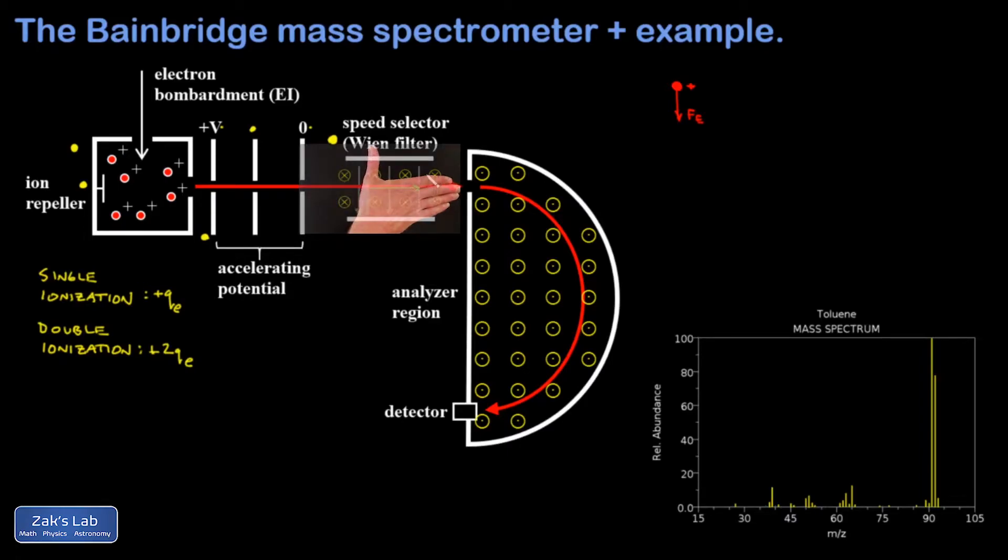I point my fingers in the direction of the velocity and sweep out to the direction of the magnetic field. The direction of my thumb is the direction of magnetic force, and that's upward. Since the magnetic force is speed dependent, we should be able to find one special speed for which the force is balanced.